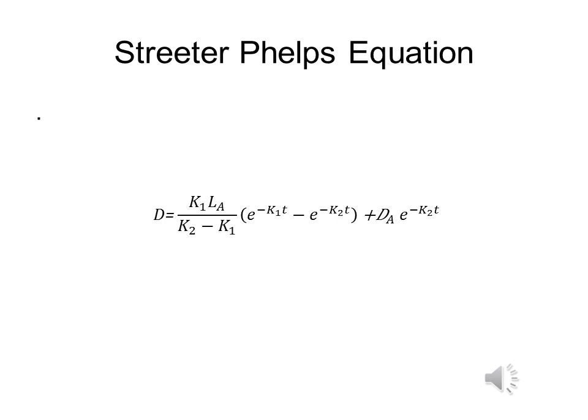The Streeter-Phelps equation is used when testing polluted waters. It shows how DO produces downstream due to LT. The equation itself is written out as shown.